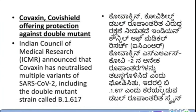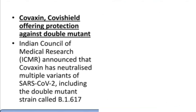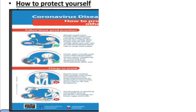Mutation will keep occurring, as we've seen with coronavirus, rhinovirus, Ebola, and other viruses. Since we are going for vaccination, does the vaccine — whether Covaxin, Covishield, or Sputnik — help against mutations? ICMR announced that Covaxin has neutralized multiple variants of SARS-CoV-2, including the double mutant strain called B.1.617. So even if the virus mutates, the vaccine you are taking will be really helpful.